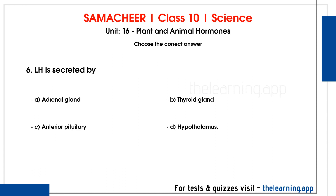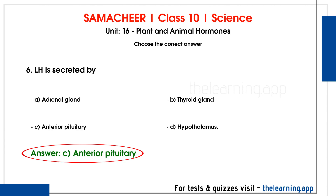Sixth question: LH is secreted by. Options are A) Adrenal gland, B) Thyroid gland, C) Anterior pituitary, D) Hypothalamus. Correct answer is option C, anterior pituitary. LH stands for luteinizing hormone. This hormone is secreted by the anterior pituitary and is responsible for female ovulation.